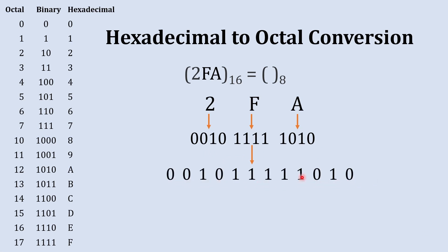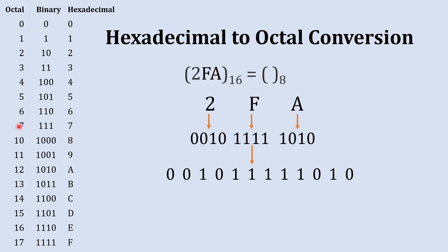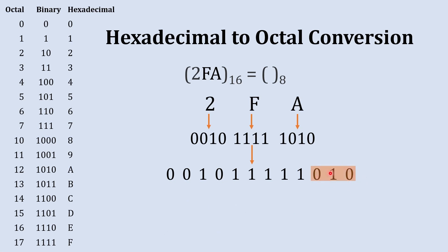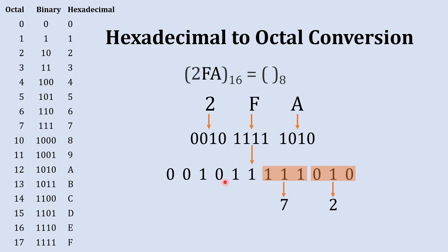Combining these gives the full binary number: 0010 1111 1010. Now to convert binary to octal, remember that the largest single-digit octal number is seven, representable using three-digit binary, so we group into sets of three from the right. The first set is 010 — that is 2. The next set is 111 — that is 7.